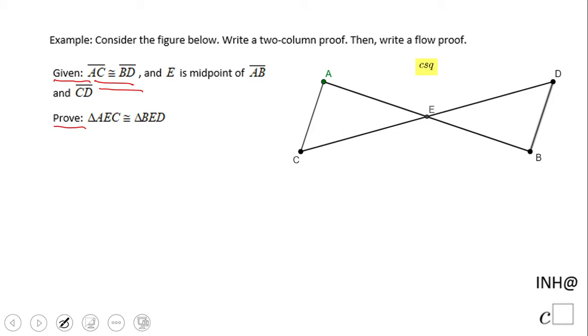It's given that AC congruent to BD. Also, I'm looking to the second part of the given statement. In fact, second, E is the midpoint of AB. That means these two guys need to be congruent, otherwise E cannot be the midpoint.